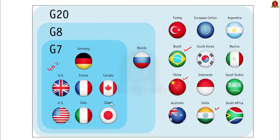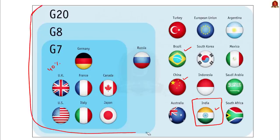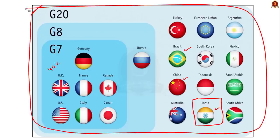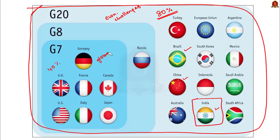Now let us briefly see G20. The G20 is important because India is a member. It is a larger group including G7 members, formed in 1999 to bring more countries on board to address global economic concerns. G20 has a global GDP share of 80%, but it only discusses economic challenges, whereas G7 discusses a wider range of global issues.